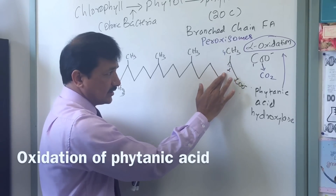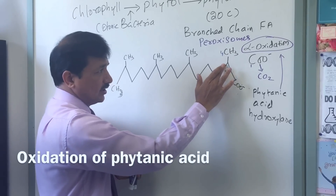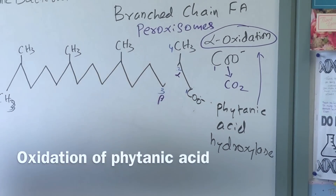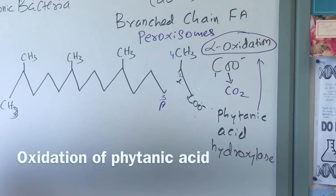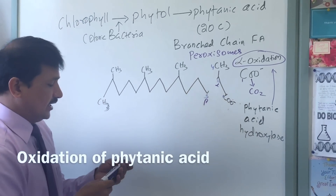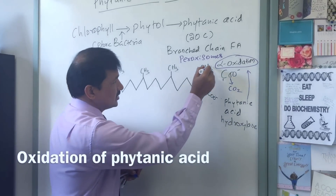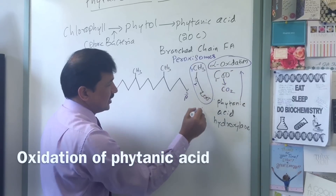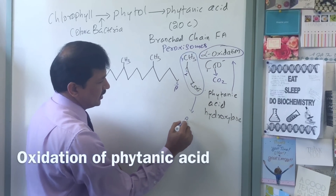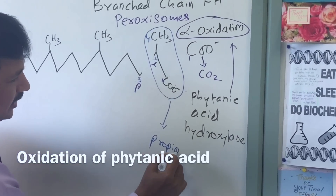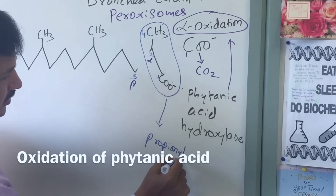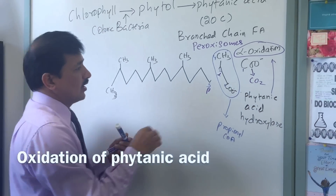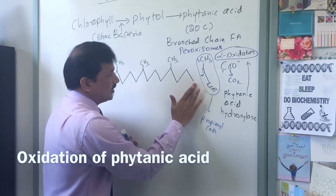Whatever molecule is released — this is the 3-carbon compound that is released — this 3-carbon is propionyl-CoA. Propionyl-CoA is released. At the end of that reaction, this will become the carboxyl carbon, COO minus. So the first beta oxidation of pristanic acid releases propionyl-CoA.